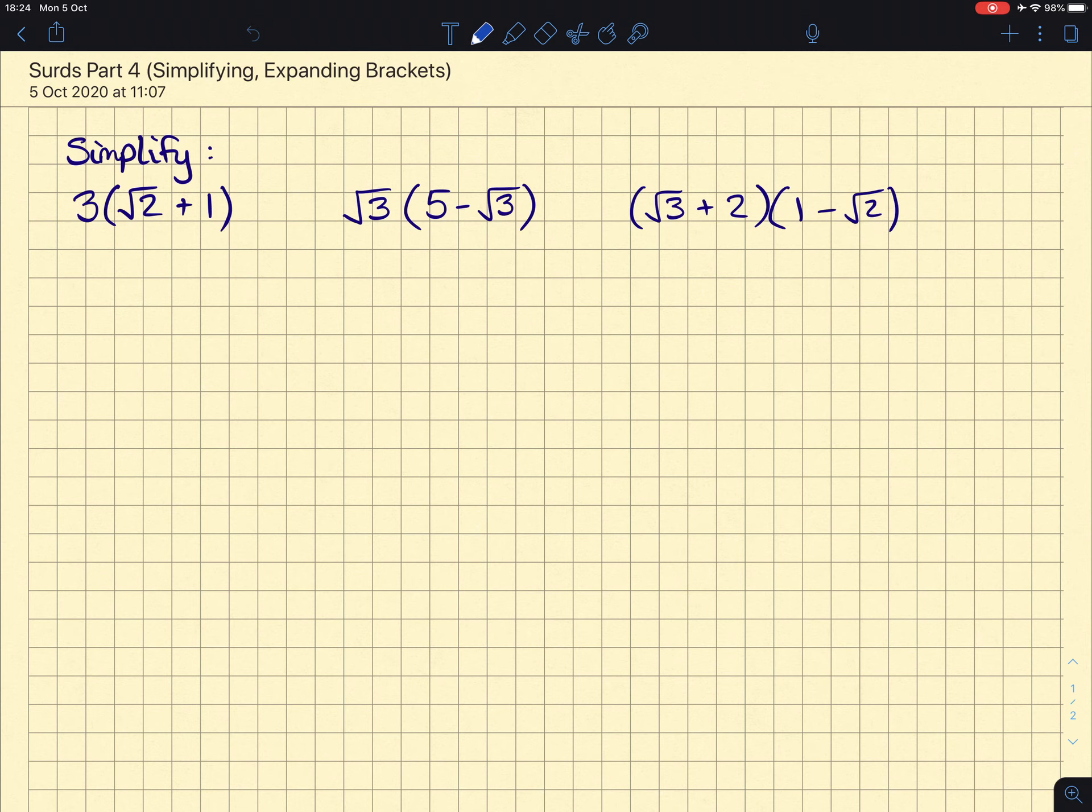So in the first one here, we have a 3 outside of this bracket, which means it's going to multiply everything inside by 3. So 3 times root 2 will give us 3 lots of root 2, and then 3 times the 1 will give us 3.